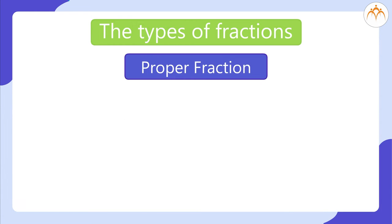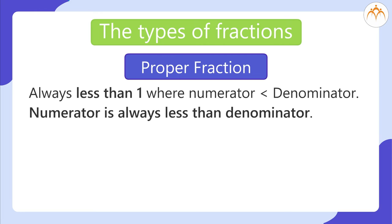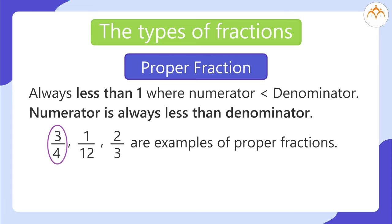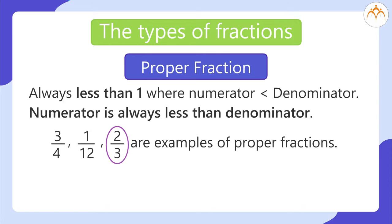A proper fraction is always less than 1, where the numerator is less than the denominator. The numerator is always less than the denominator. Examples: 3 divided by 4, 1 divided by 12, and 2 divided by 3 are proper fractions.